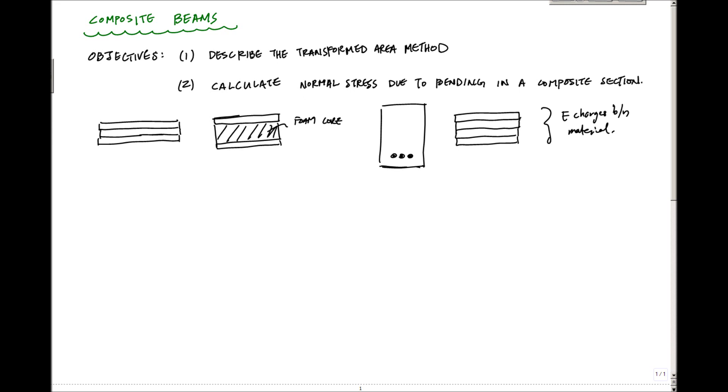The idea of the transformed area method is to take this section of multiple materials and transform it all into an area with an equivalent one single material so that you can use sigma equals minus m y over i z. You can use this flexure formula to calculate your normal stresses.